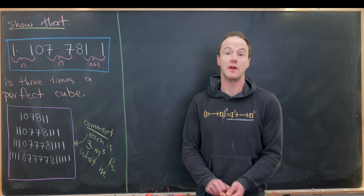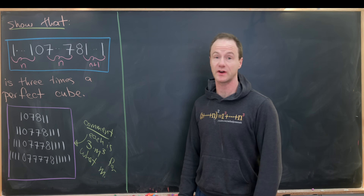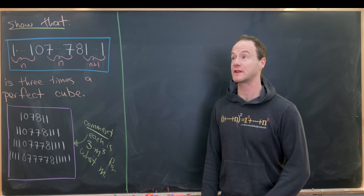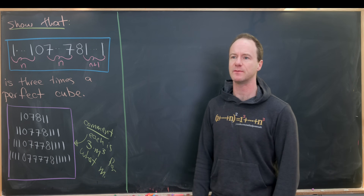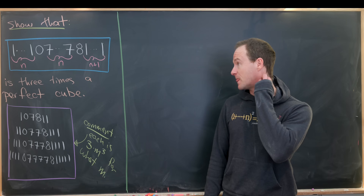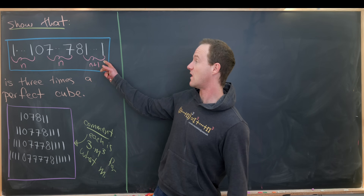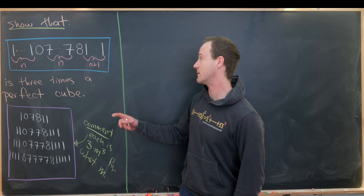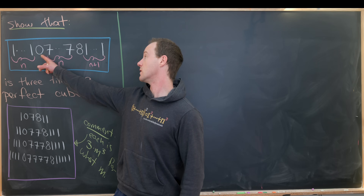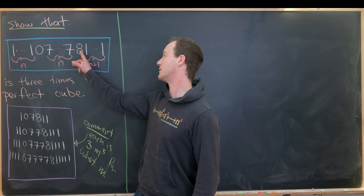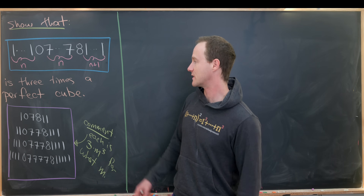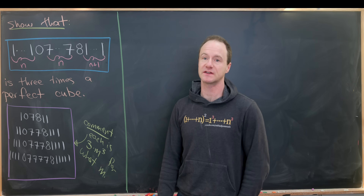Here we've got a nice, fairly simple number theory problem if you know the trick, and we're highlighting this because this trick is really, really useful — it's one of those that you should keep at the tip of your tongue at all times. Our goal is to show that the following number — which can be described as n ones, followed by a zero, followed by n sevens, followed by an eight, followed by n plus one ones — is three times a perfect cube.